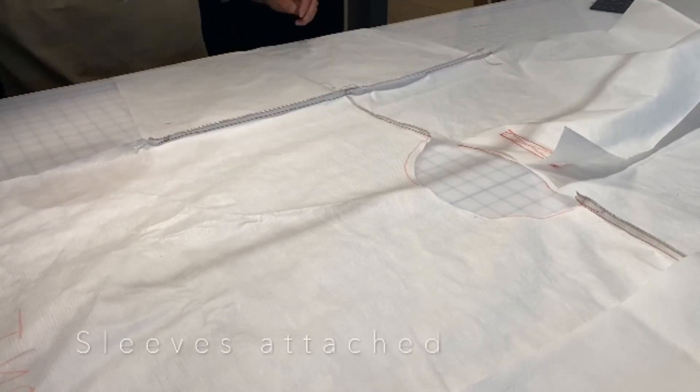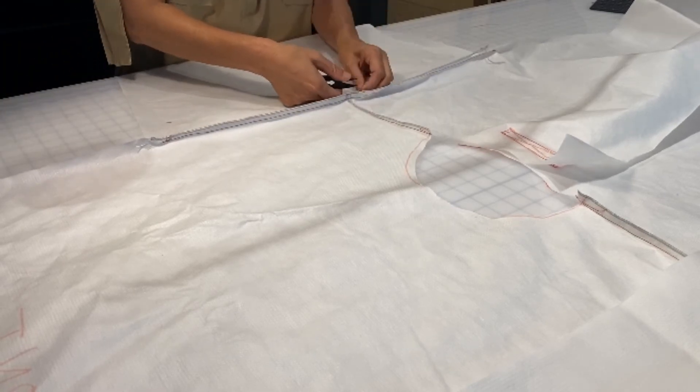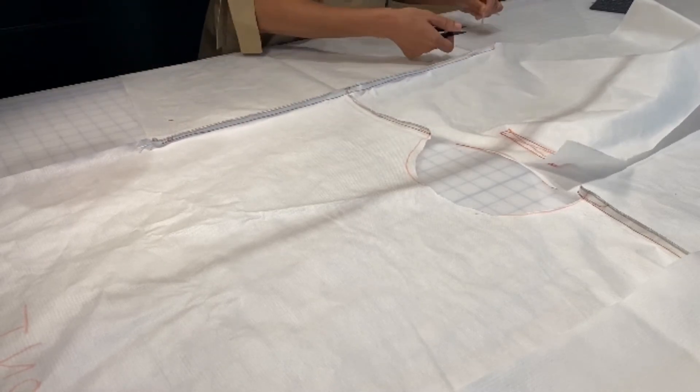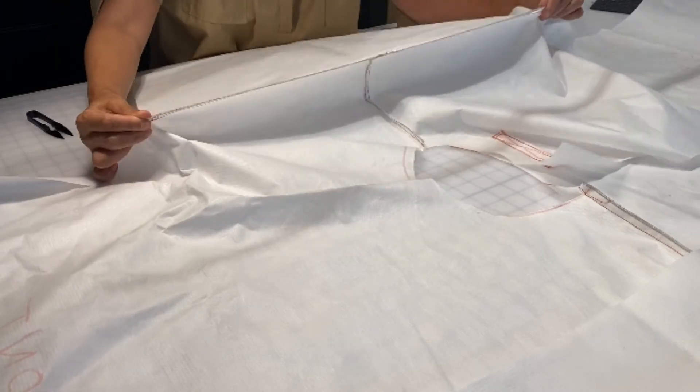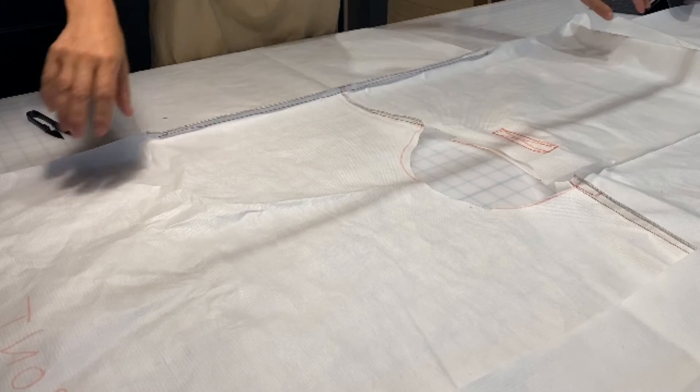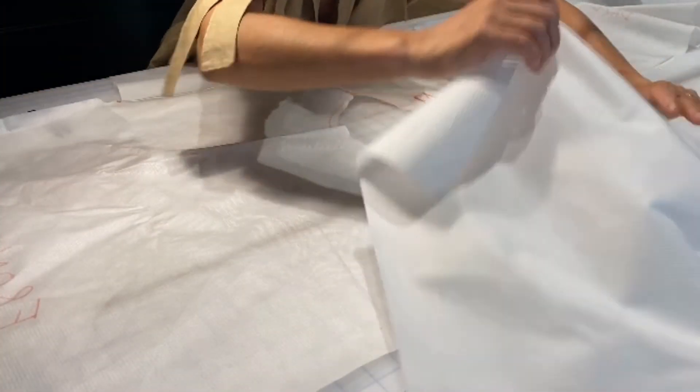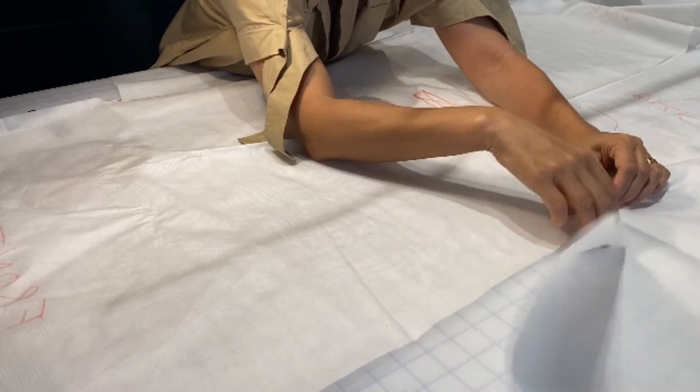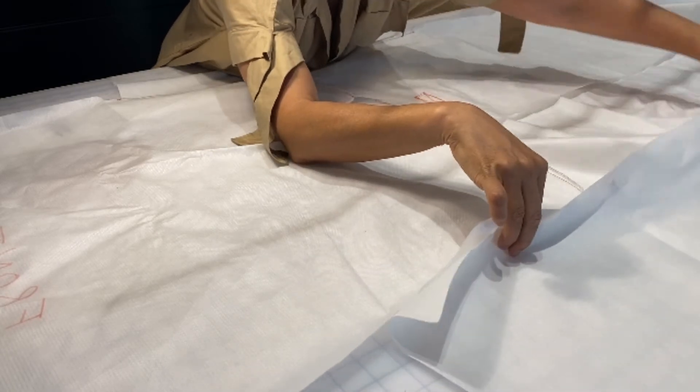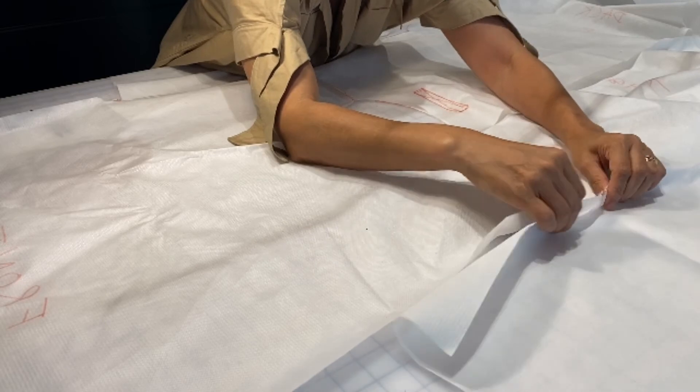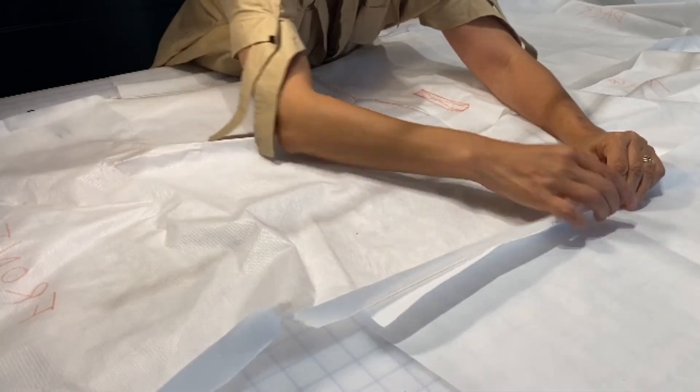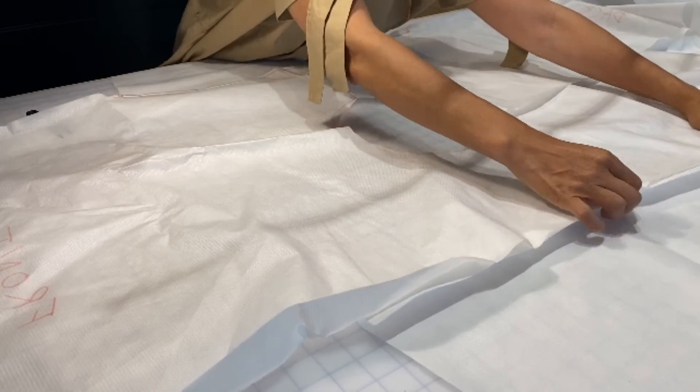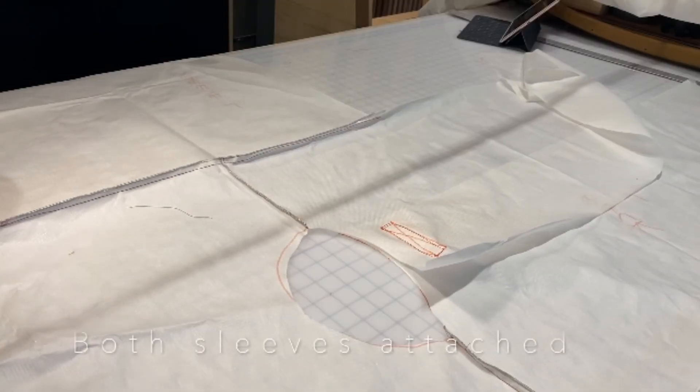Now we have our sleeves attached and we're going to clip all of our extra threads that we may have missed while we were sewing. Then we're showing you just the other side again. No pins for making these isolation gowns. We don't want to puncture the fabric. So just place it as best as you can, and then get ready to sew. So now we have both of our sleeves attached.